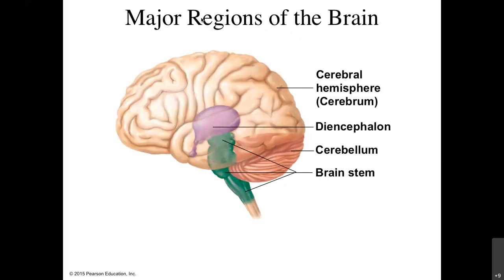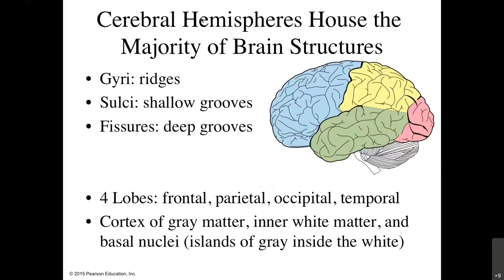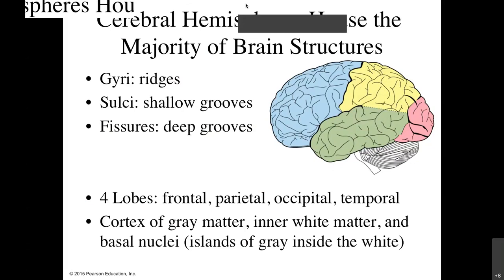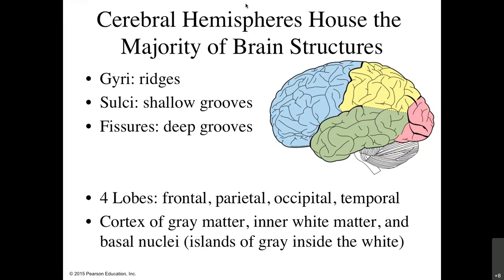The major regions of the brain we'll focus on are the cerebral hemispheres (cerebrum), the diencephalon and brainstem at the middle and base, and the cerebellum at the back. Your cerebral hemispheres house the majority of brain structures — two hemispheres, left and right, each with four lobes. The brain has ridges called gyri, small grooves called sulci, and deep grooves called fissures that generally separate the lobes.